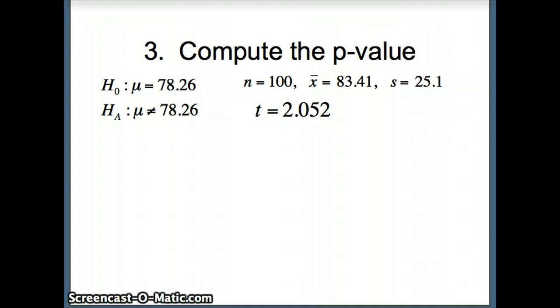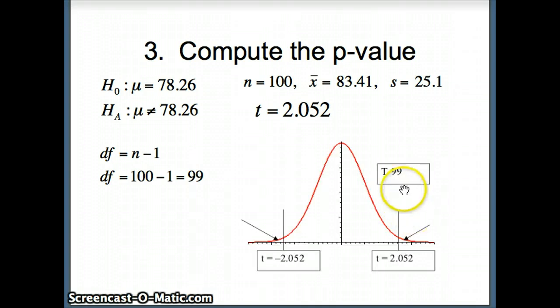Now compute the p-value. We have our H naught and H A, statistics, and test statistic t. Degrees of freedom are n minus 1, so 100 minus 1 equals 99. We have a t with 99 degrees of freedom. H A is mu doesn't equal 78.26, so it's a two-tailed test.